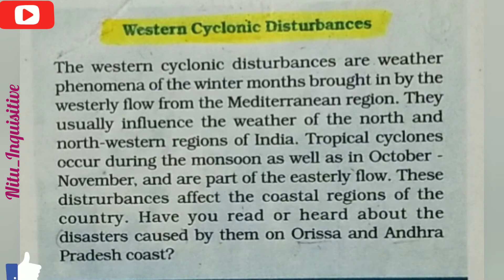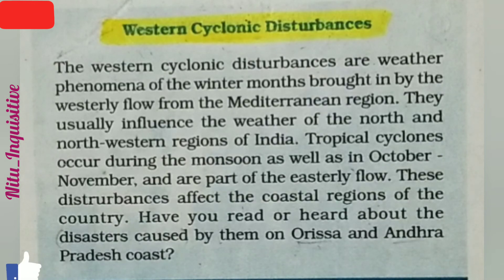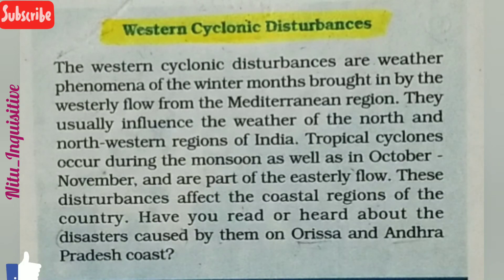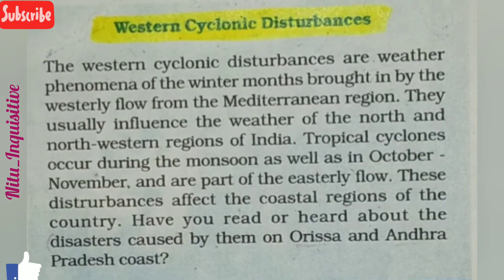This Western Disturbance has a very harmful effect in many places — because of the disasters caused by it in Odisha, Andhra Pradesh, and Tamil Nadu. And in many places it is beneficial, such as in northwest India, where it has been very helpful in growing rabi crops by providing rainfall. So these are the positive and negative causes of this Western Cyclonic Disturbance. If you liked this video, please like it and subscribe to this channel for upcoming videos. Thanks for watching.